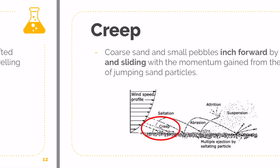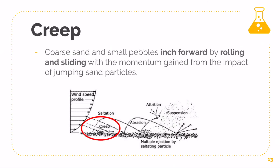Creep is also easy. Creep occurs when coarse sand and small pebbles — the heavier ones — inch forward and roll forward with a sliding effect, based on the momentum gained from being slightly picked up. As they slightly lift off the ground and fall back, they will start to roll. Think of it like a boulder rolling on the floor because of momentum pushed into it by the wind. As the wind pushes it, it will creep along the surface.